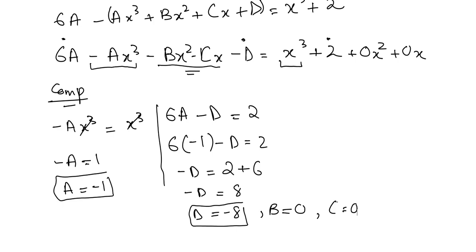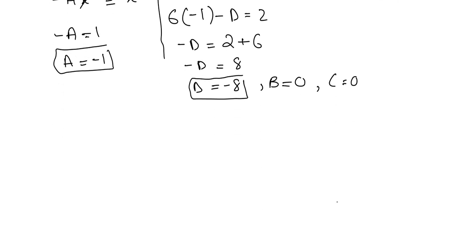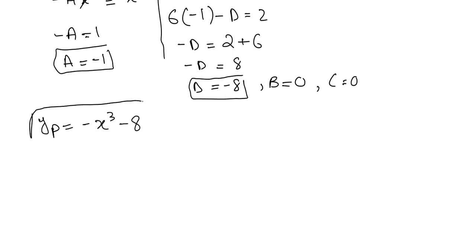So the particular solution is y_p = −x³ + 0·x² + 0·x − 8, which simplifies to y_p = −x³ − 8.